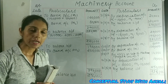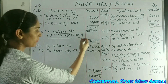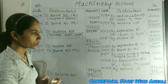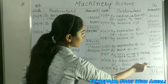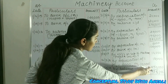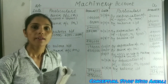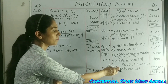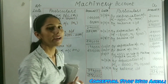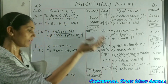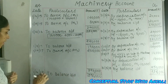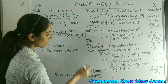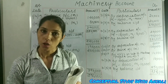Now we do the balancing. The debit side total is Rs. 3,96,000. After crediting all entries, the balance carried down on 31st March 2018 is Rs. 2,50,000. On 1st April 2018, balance brought down is Rs. 2,50,000.